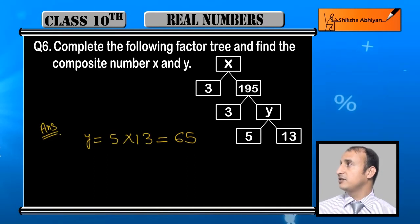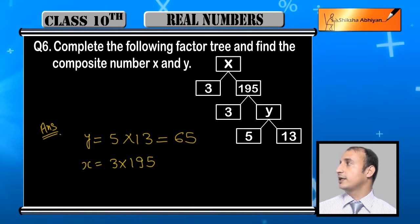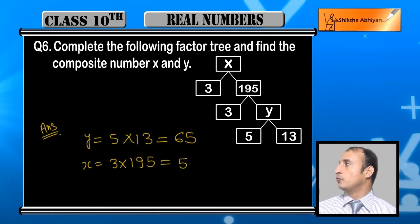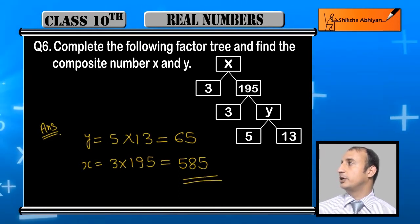Student, X is equal to 3 into 195. And when you multiply this, you will get 585. So these x and y values complete your answer.